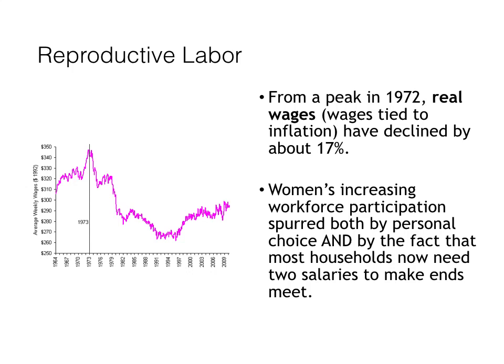If anything, the financial squeeze on American families is getting worse over time, not better. On average, American families are struggling more to make ends meet today compared to families from 50 years ago. While the average worker would seem to be making more money every year than workers of the past, what economists call real wages — meaning wages tied to inflation — have actually declined since the 1970s. This means the purchasing power of the average worker's paycheck just hasn't kept up with the cost of stuff.